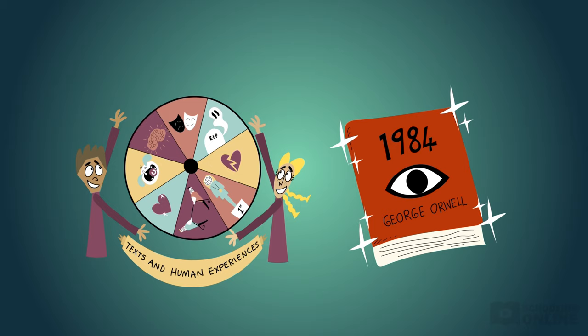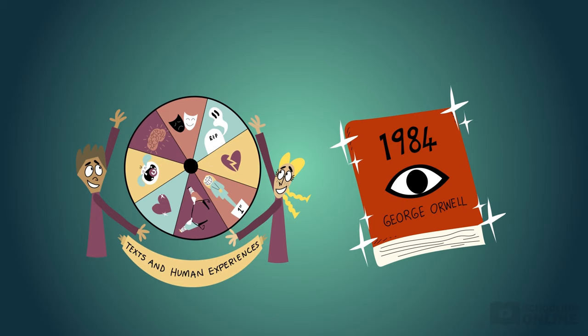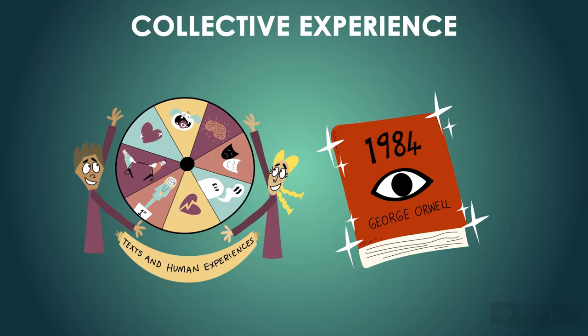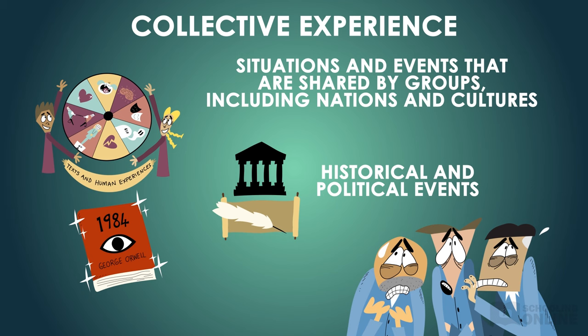Now let's take a look at how collective experience is represented in the novel. These are situations and events that are shared by groups, including nations and cultures. They include historical and political events, like war.